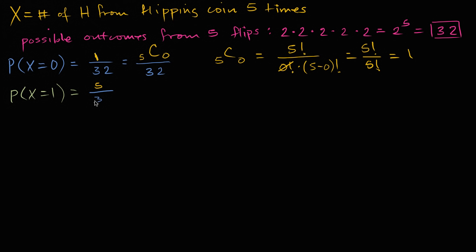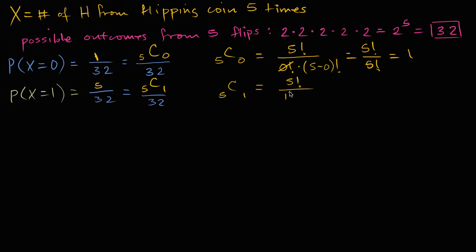This is the same as saying: out of five flips, we're choosing one of them to be heads — five choose one — over 32. Five choose one equals five factorial over one factorial times four factorial, which equals five factorial over four factorial, which equals five. So P(X=1) = 5/32.